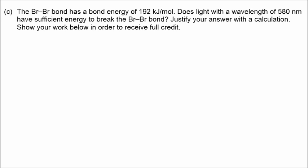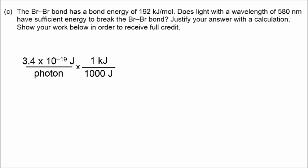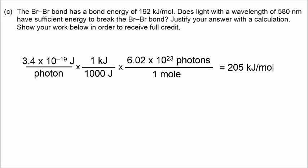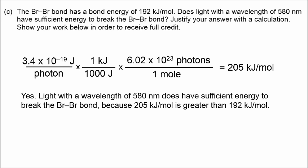In part C, we decide if this light has enough energy to break the bond in bromine molecules. Converting from joules per photon to kilojoules per mole using Avogadro's number gives around 205 kilojoules per mole. The answer is yes — this light is sufficient to break the Br-Br bond because 205 kilojoules per mole is greater than the 192 kilojoules per mole minimum required.